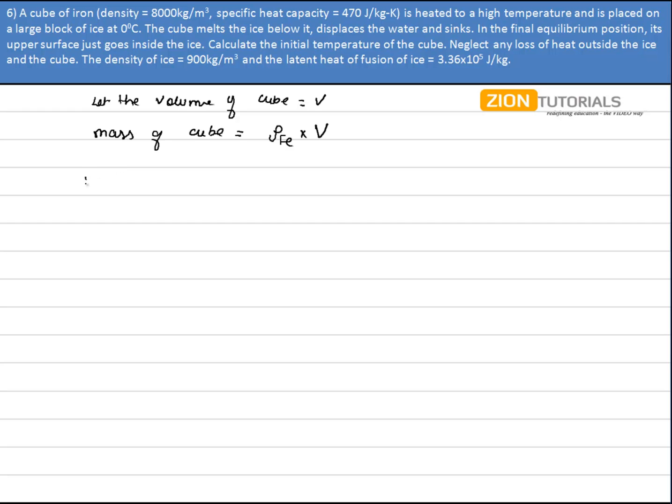So mass of ice that is melted will be equal to density of ice into the volume. Alright. Now this volume and this volume are same by the Archimedes principle.